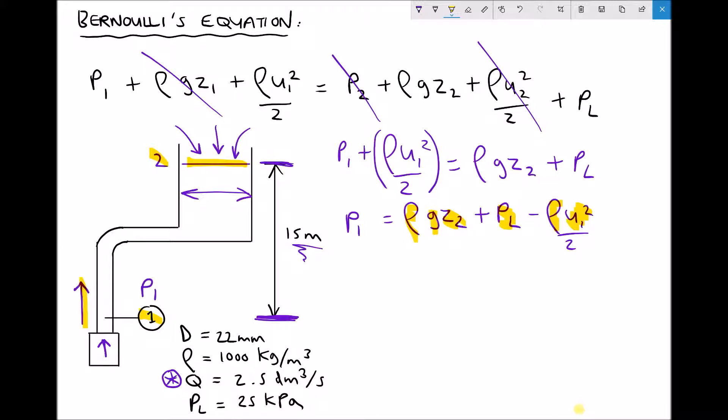What we do have is a volume flow rate. And our volume flow rate is 2.5 decimetres cubed per second. Now this is quite an unusual unit but it's quite commonly used in fluid dynamics. Especially when we're looking at the delivery rates of pumps and compressors and so on. So you will see decimetres cubed. What we need to be able to do is to convert that into SI units.